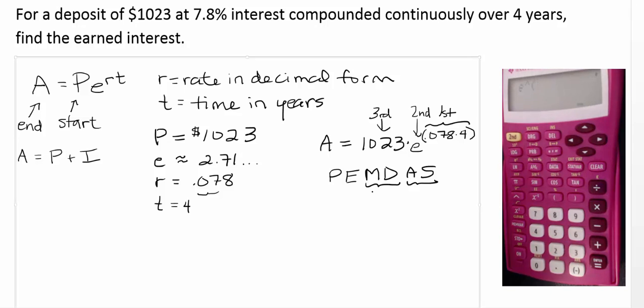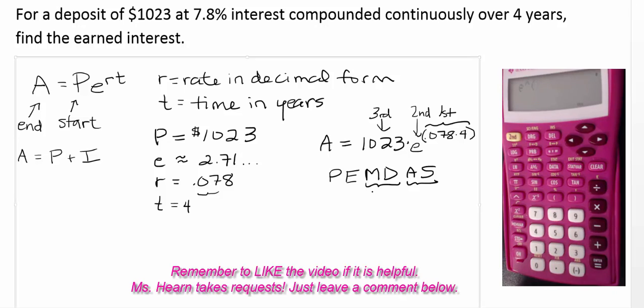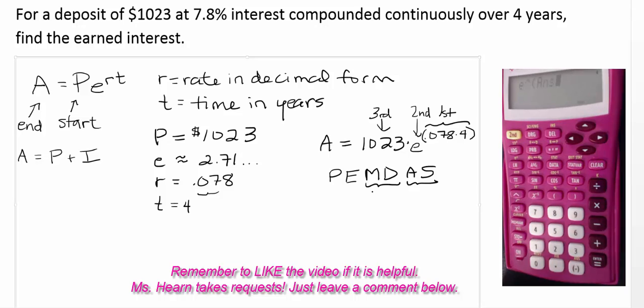That's okay because our calculators these days pretty much all have an ans function. Down at the bottom here, you see it above the negative. And that ans has stored the answer to the previous calculation. So I'm going to say 2nd ans, close my parentheses, equals.